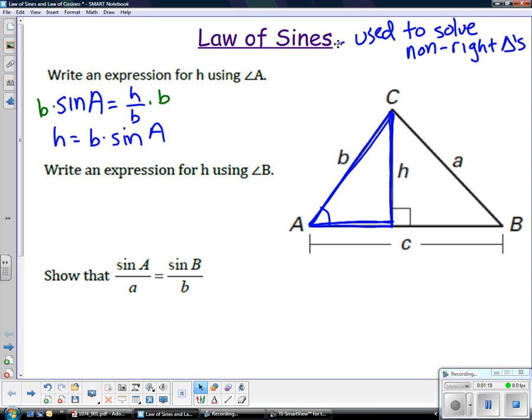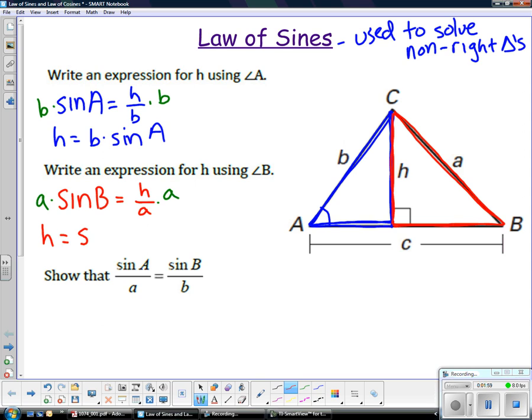Now we want to write an expression for h involving angle B. Go to the other part of the right triangle. h is standing for the height of the triangle or the altitude. So angle B, the sine of angle B is h over a because a is the hypotenuse and h is the opposite leg. Multiply both sides by a. So h in this case is going to be a times the sine of angle B.